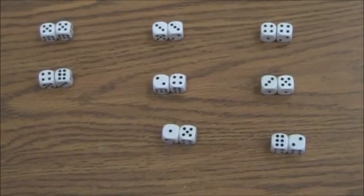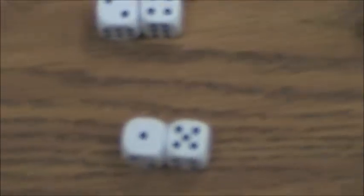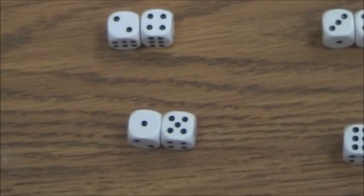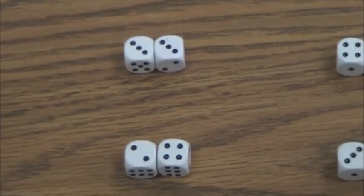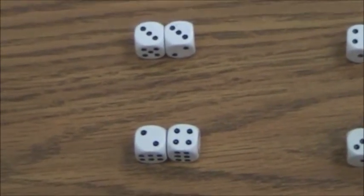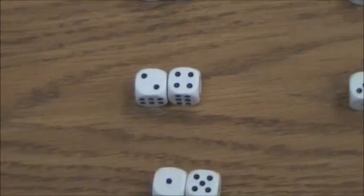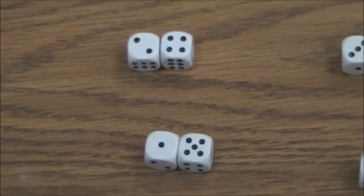And at the bottom, one is one by six or six by one. So the hard four is—the hard six, excuse me, is three by three. And the other two are soft sixes.